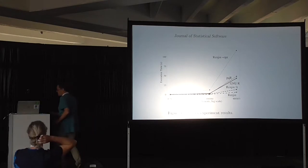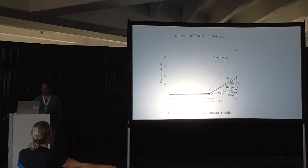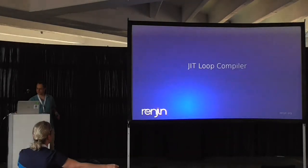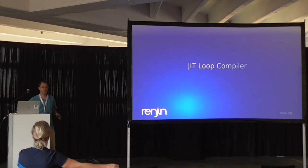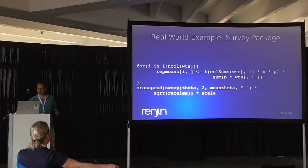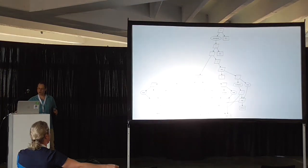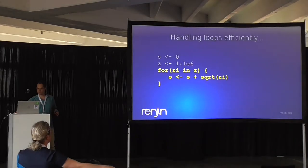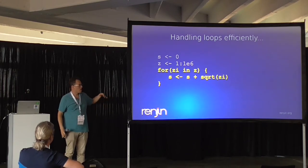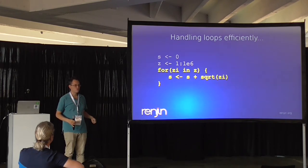This is Renjin's vector pipeliner. We owe a lot of this to collaboration with CWI — applying the same optimizations used for databases to statistical analysis. But these optimizations principally work for R's built-in operators like colSums, sum, plus, minus — all the primitives we can create bookmarks for: cross product, square root. These are all built-ins we can easily work with. But what about R code? R is all about writing your own functions and operations on data, so the question is how do we apply those powerful global optimizations to scalar R code?